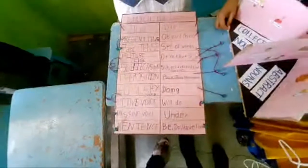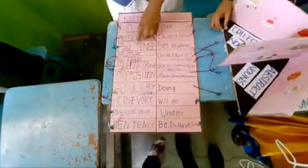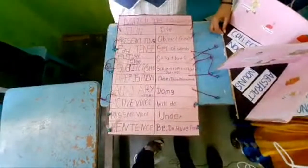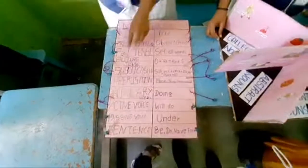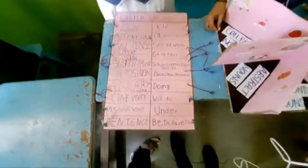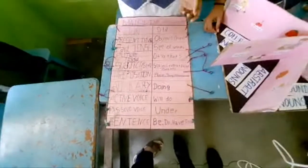Past tense refers to things that have happened in the past. Future tense refers to things which are going to happen in the future.